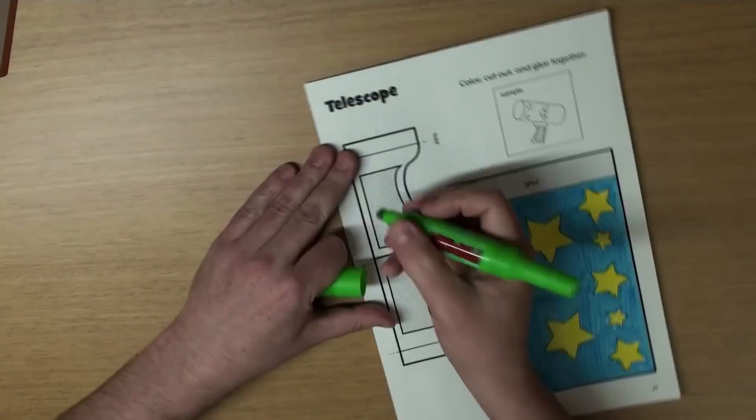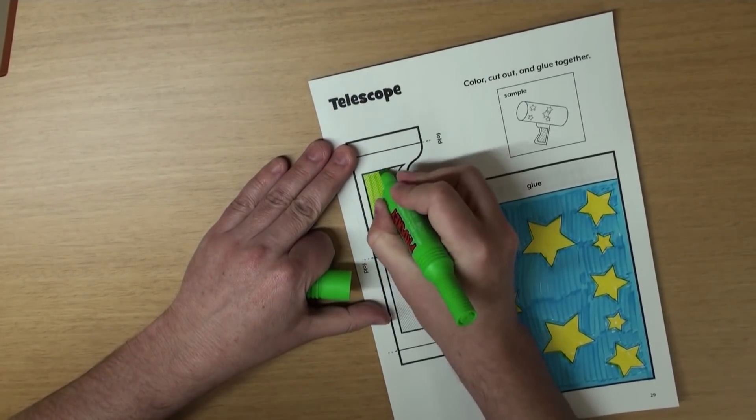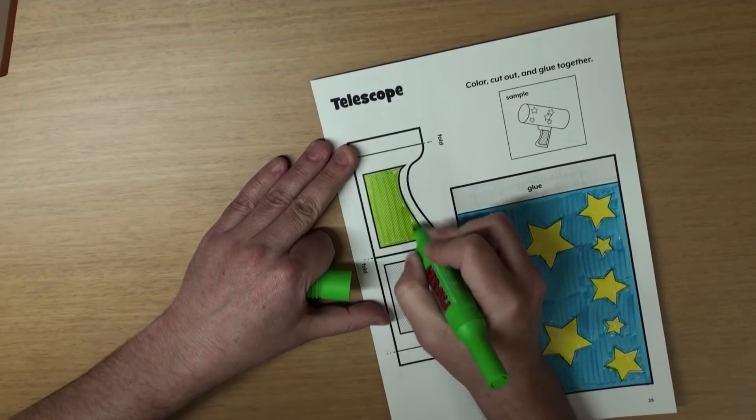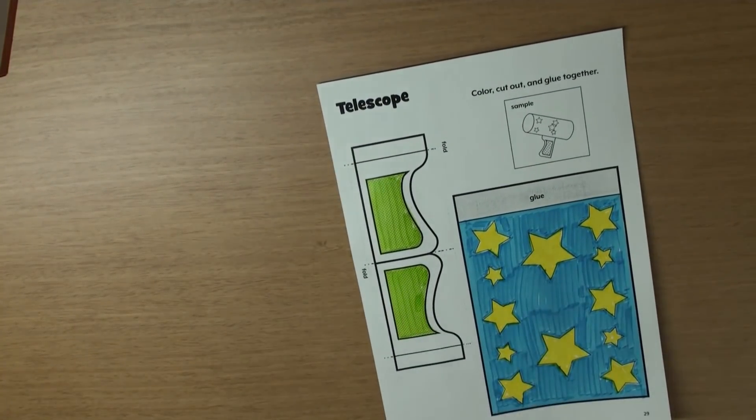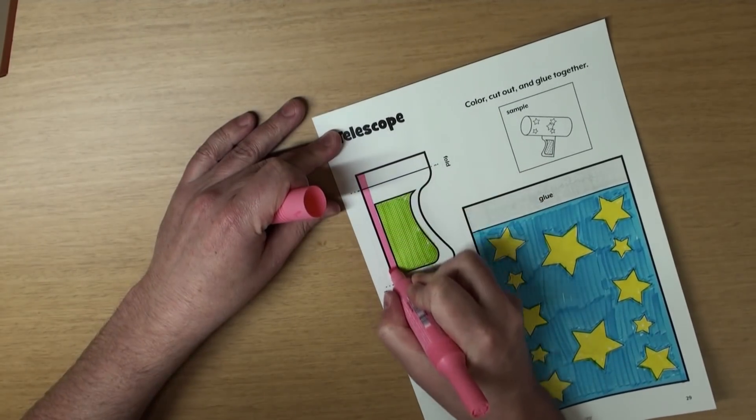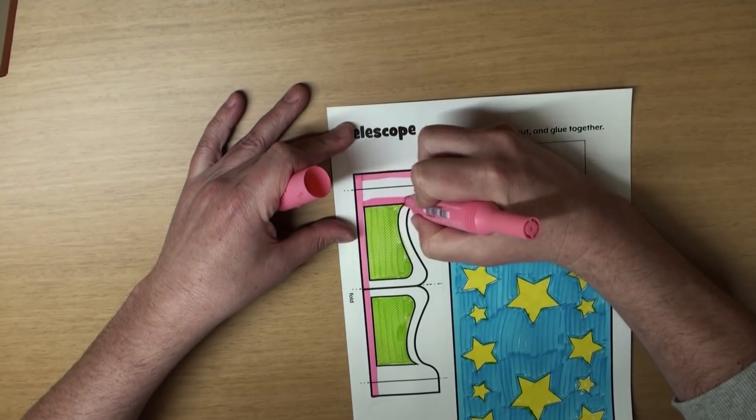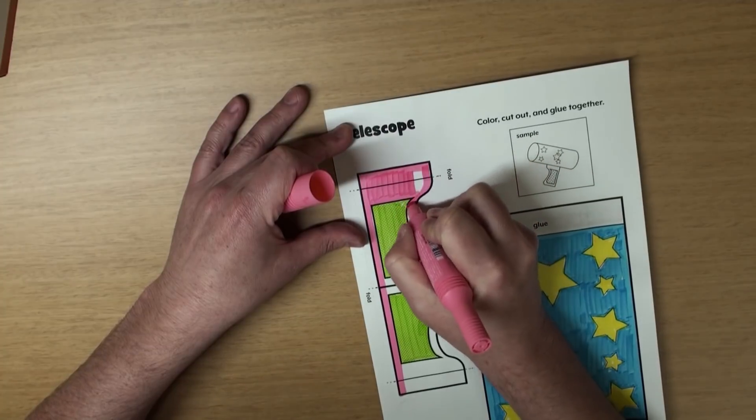And for the handle, well, we'll color the inside light green. That looks great! And the outside, well, let's color that pink. Yeah, this is a very colorful telescope, isn't it?